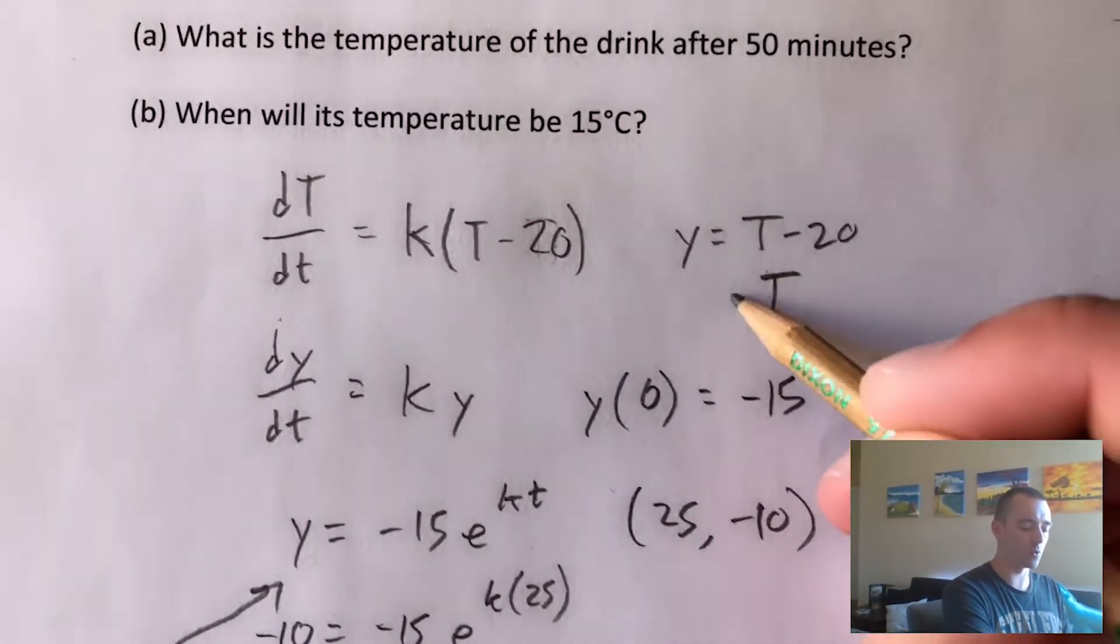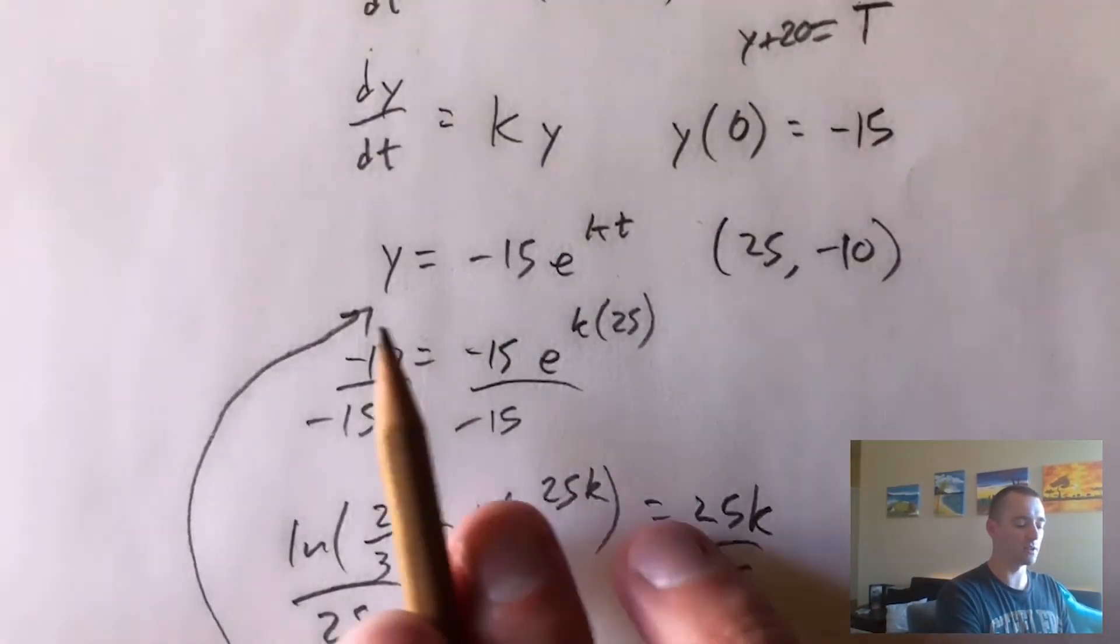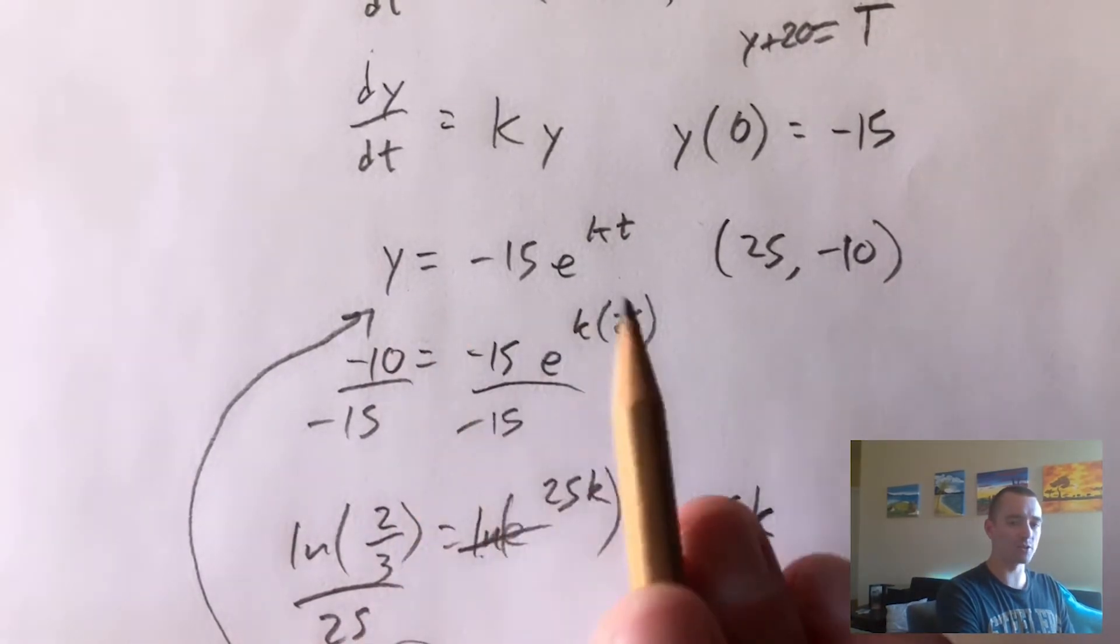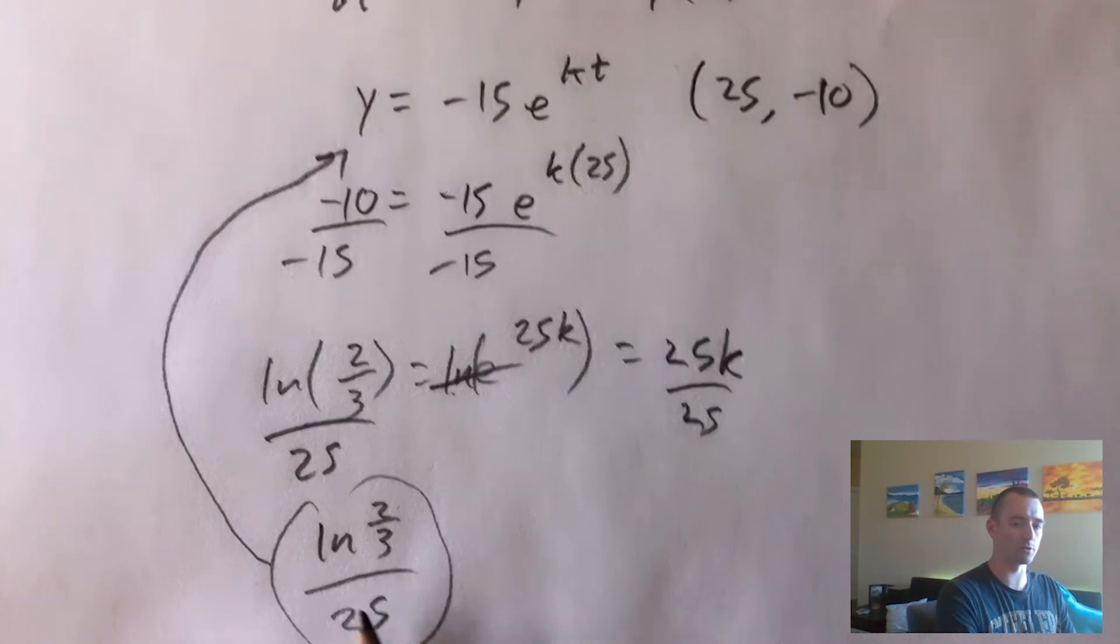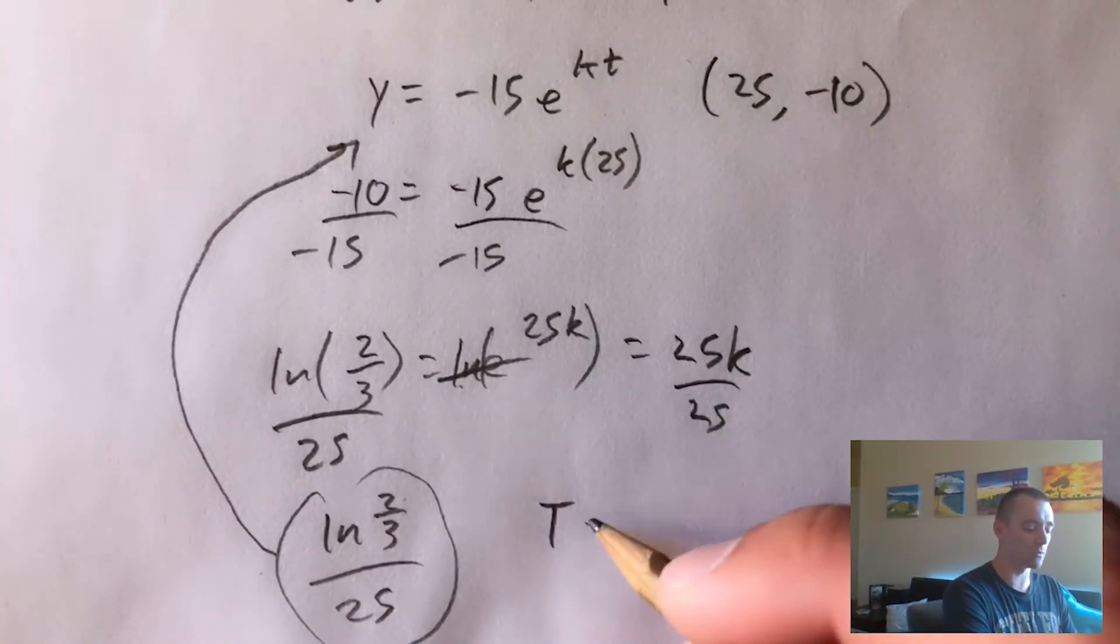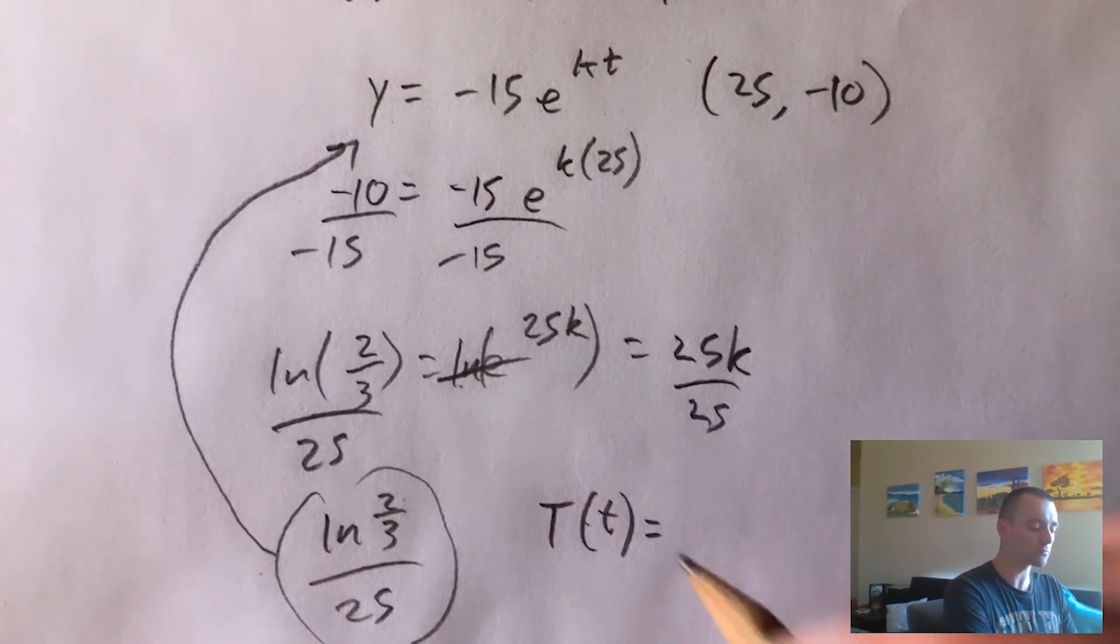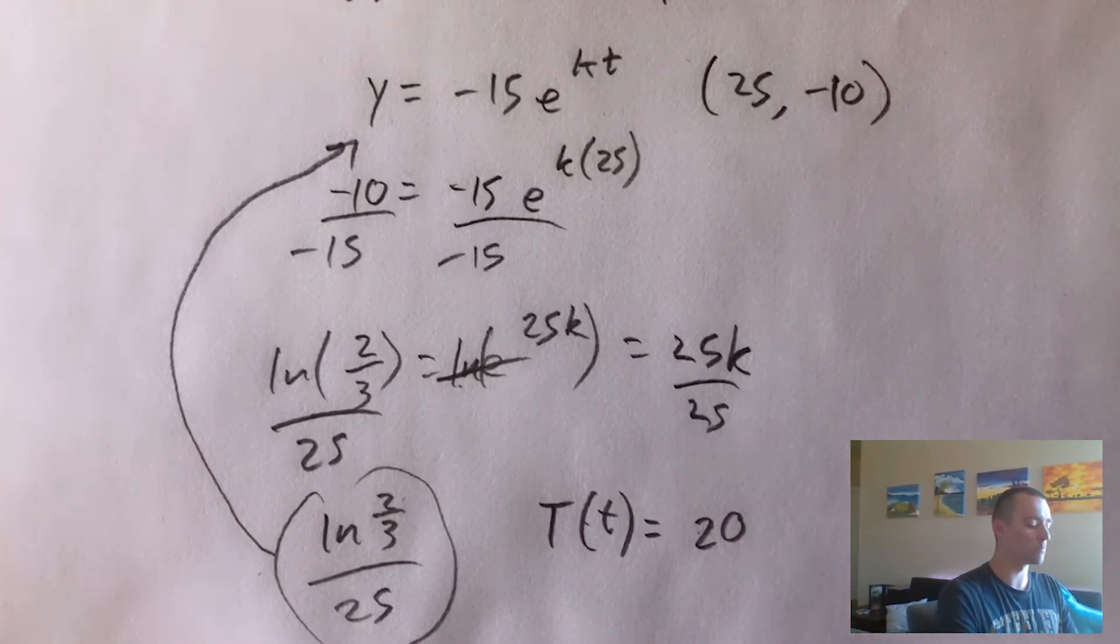So if we take this equation for y and add 20 to it, that should give us an equation for temperature. And then at the same time, we'll also put this in for k.